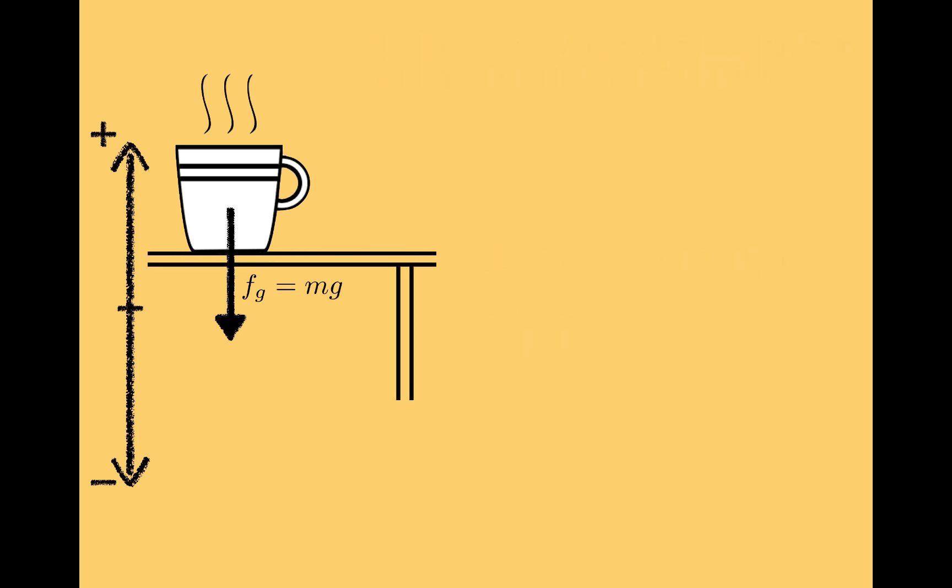Now let's switch gears and put the cup on a table. When the cup is on a table, gravity is still pulling down on it, but it doesn't accelerate, so the table must be exerting an upward force to balance gravity. We refer to a support force like this one as a normal force, and it's often denoted as F sub n or sometimes just as n. I'm going to use F sub n in this video.